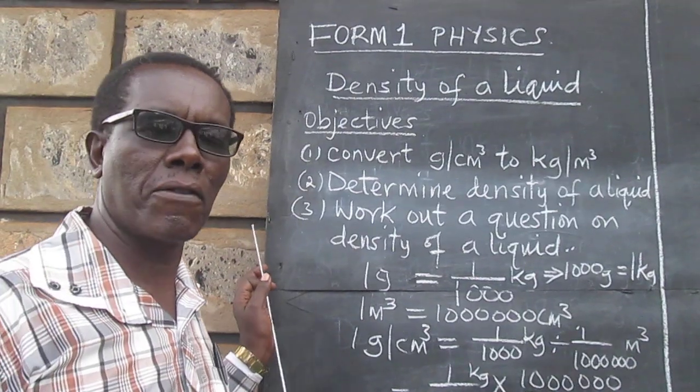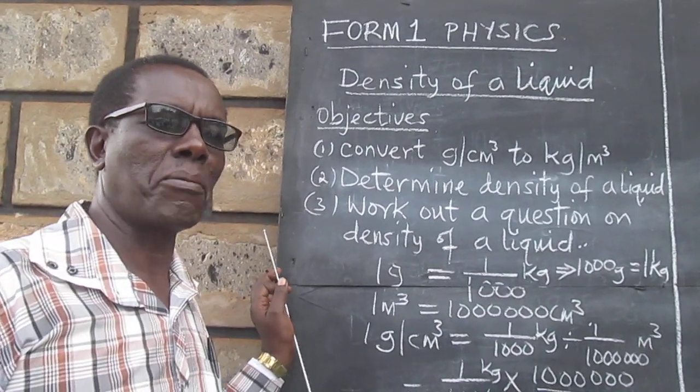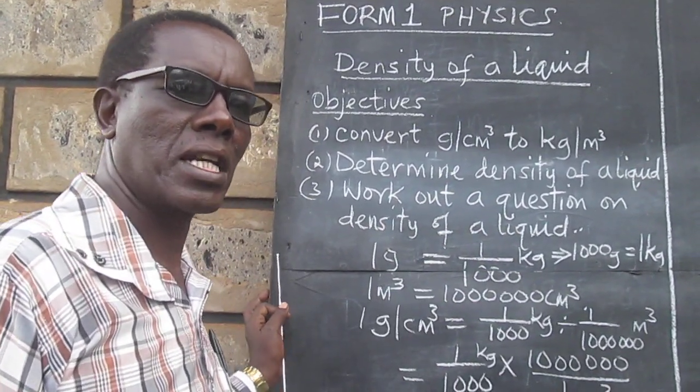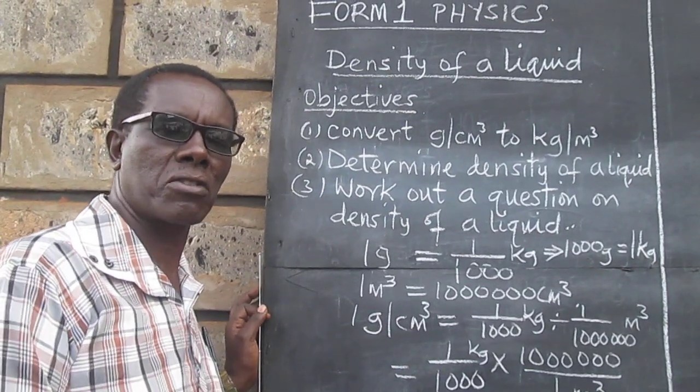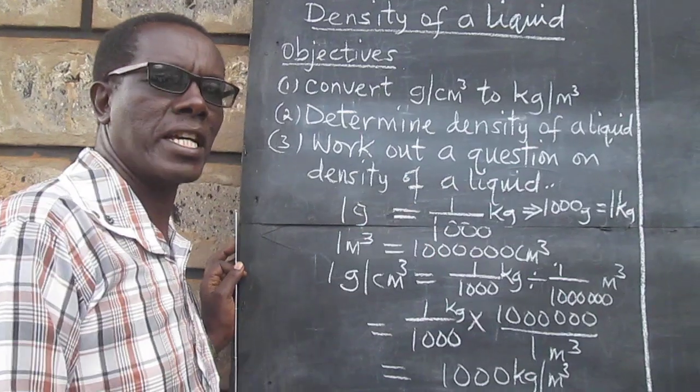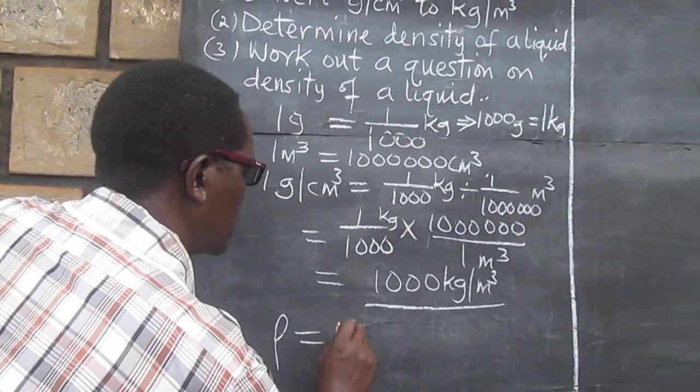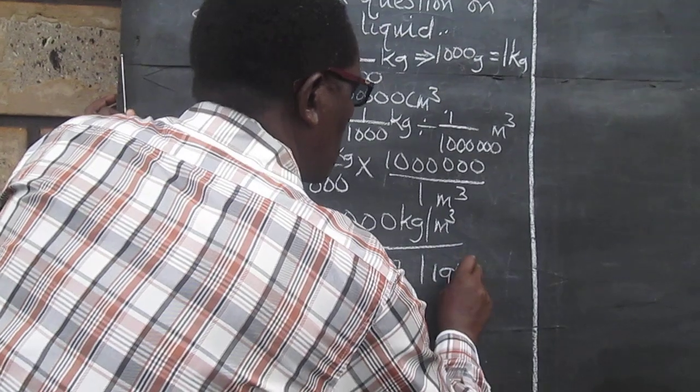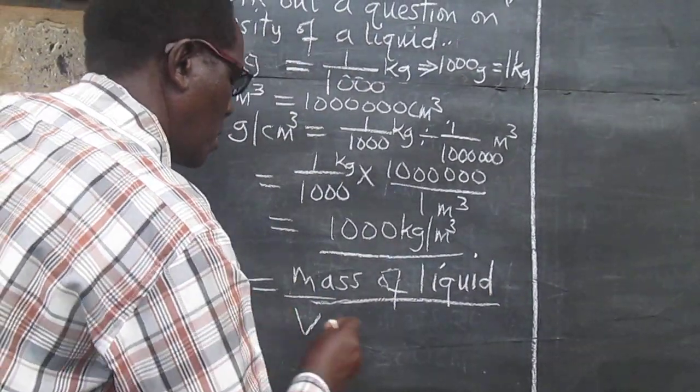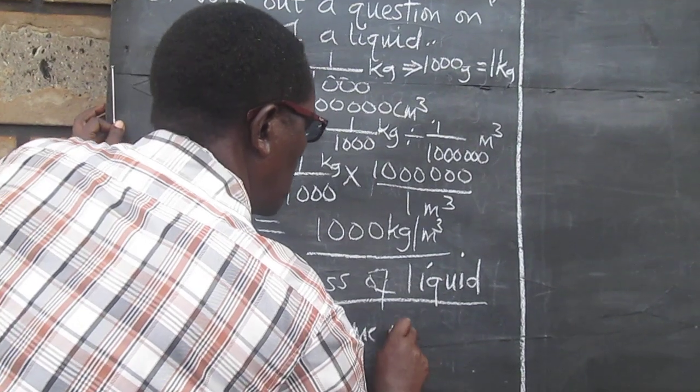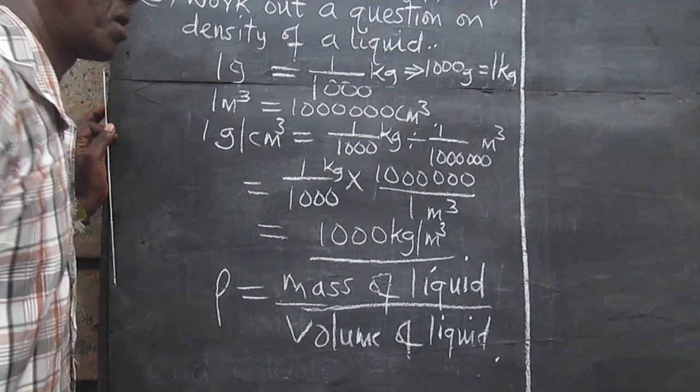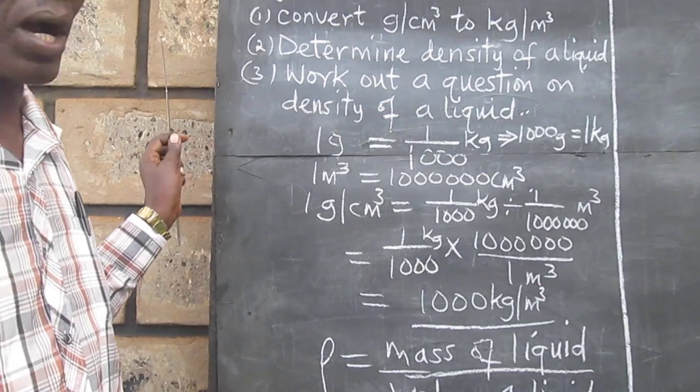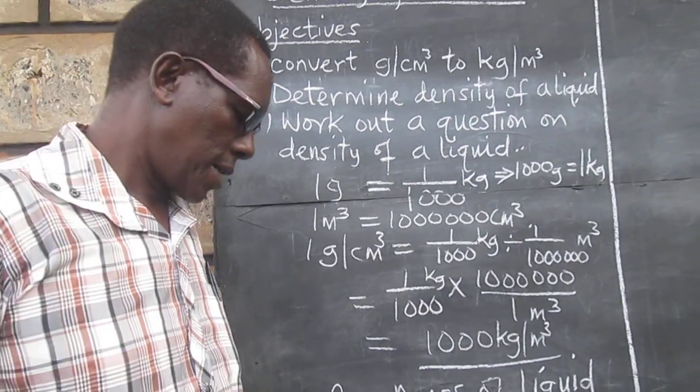Now since we have said that the volume of liquid in the container is known, it means we'll be able to have the mass of the liquid and the volume of the liquid. So we can use the formula for the calculation of density to work out the density of that liquid. I think this can be seen better in an example, so let us work out an example.